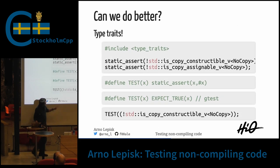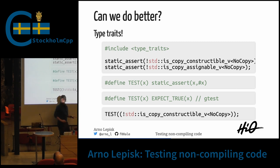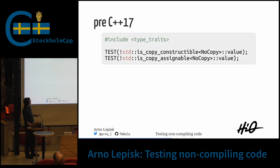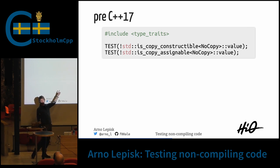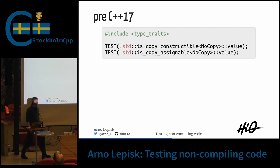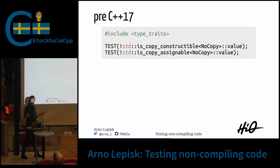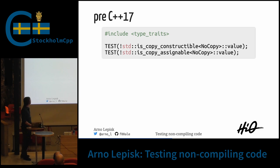I use is_copy_assignable with the _v suffix — that's a shorthand for ::value that was added in C++17. Questions so far? No? Everything crystal clear.